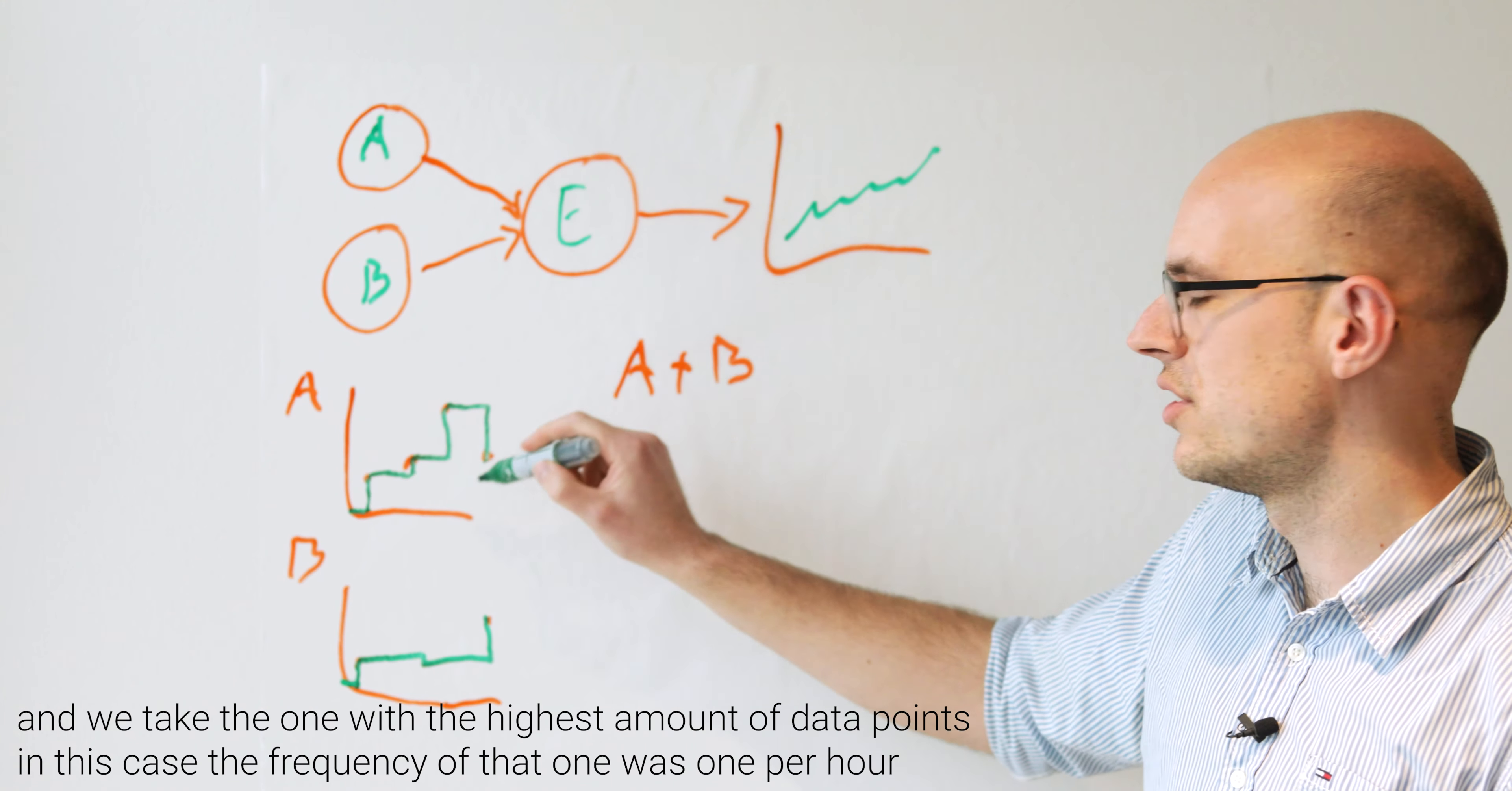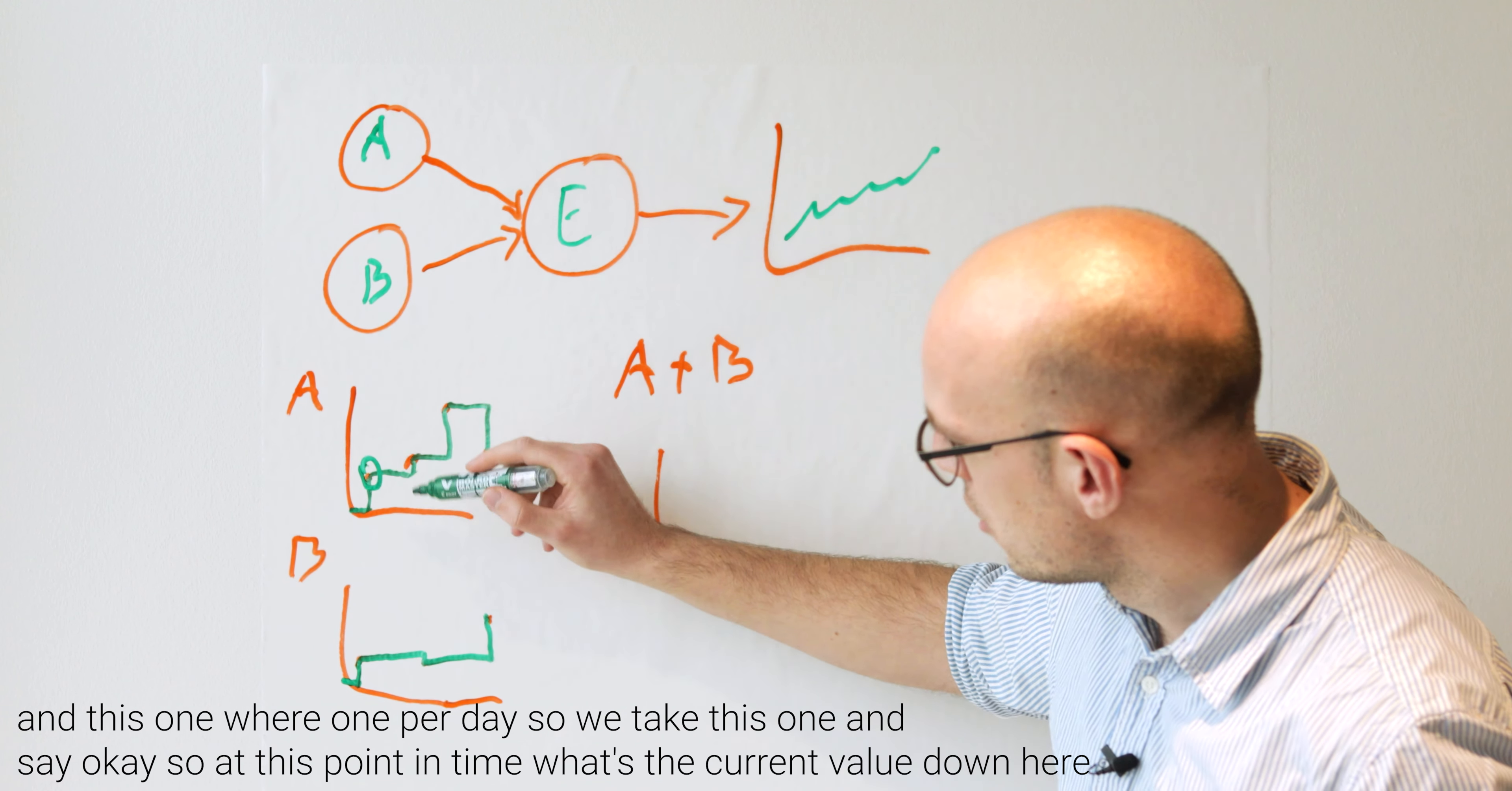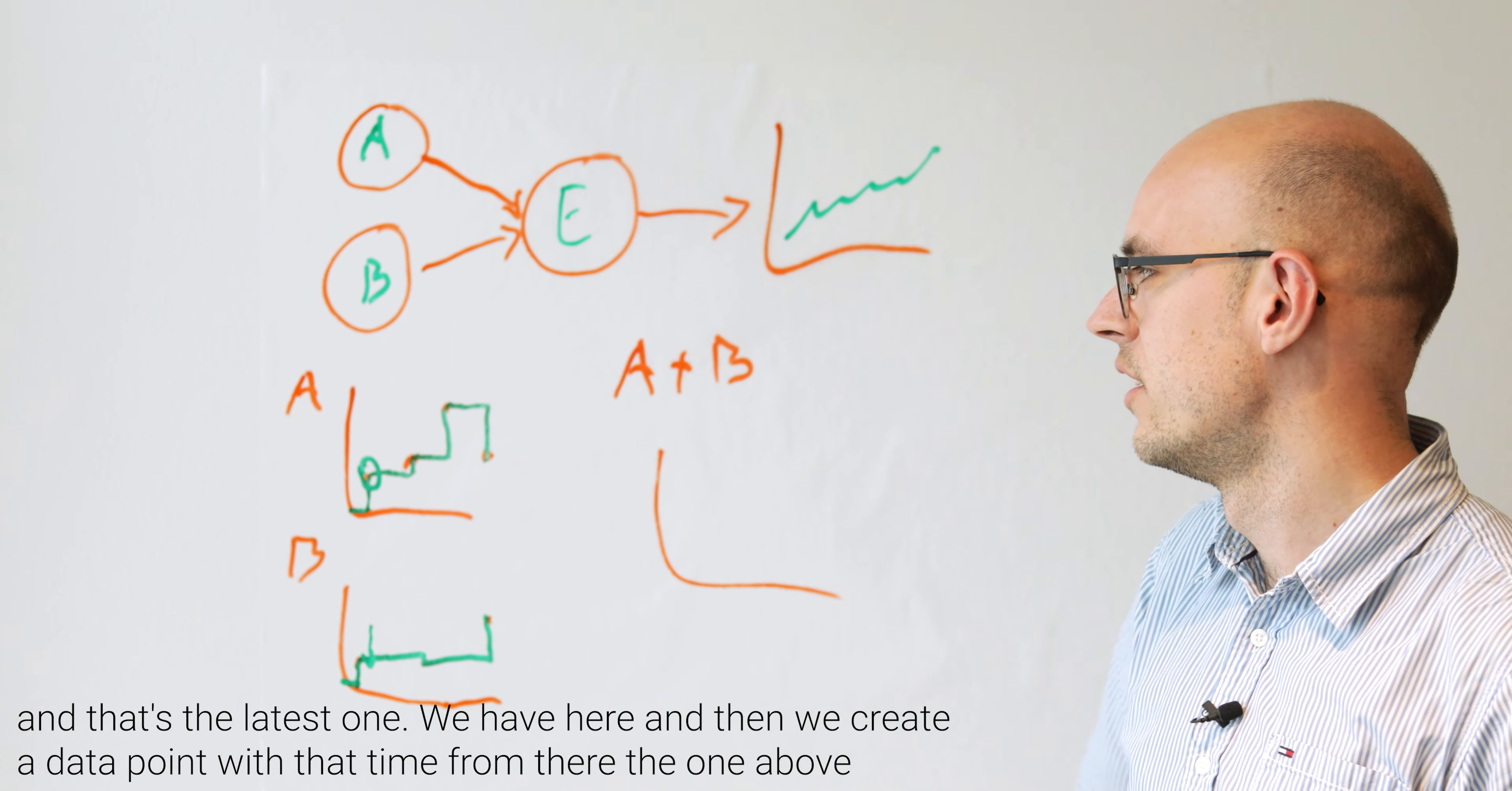So in this case, the frequency of that one was one per hour, and this one were one per day. So we take this one and say, okay, so at this point in time, what's the current value down here? And that's the latest one we have here. And then we create a data point with that time from the one above.